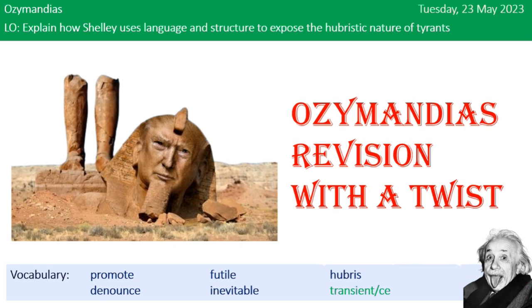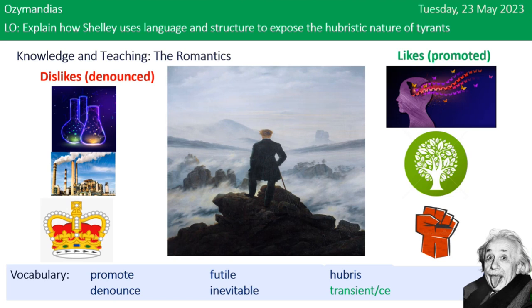Let's firstly talk about the poet himself. Percy Shelley was a romantic poet in the early 19th century. He was known for his radical political views and his poetry reflected his revolutionary ideas. He was part of the romantic movement, a reaction against the Enlightenment. They believed in the power of imagination, celebrated nature and revolution, and denounced science, the industrial revolution, and monarchy.